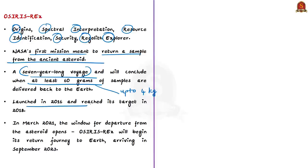Since 2018, the spacecraft has been matching the velocity of the asteroid using small rocket thrusters, while surveying the surface and identifying potential sample sites. In March 2021, the departure window from the asteroid will open and OSIRIS-REx will begin its return journey to Earth. It is expected to arrive in September 2023, when the sample return capsule will separate from the spacecraft and enter Earth's atmosphere.